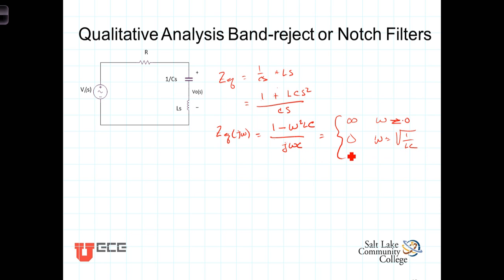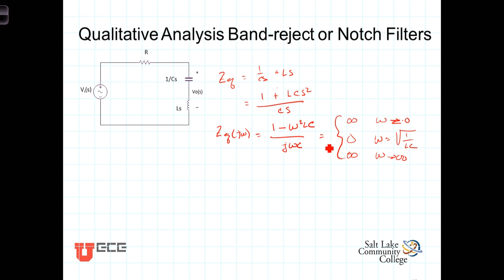Finally, as ω goes to infinity, because we have an ω² dependence in the numerator, the numerator grows more rapidly than the denominator, and this impedance tends toward infinity as ω approaches infinity. So at low and high frequencies, this impedance is large and the bulk of the signal will be dropped across it. At that middle frequency where ω = 1/√(LC), this impedance goes to zero — it actually becomes a short circuit. The capacitor and inductor effectively cancel each other, leaving no net effect, and you'll see no voltage across that impedance.